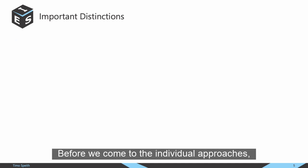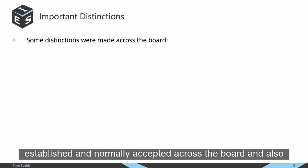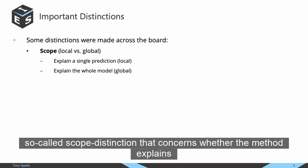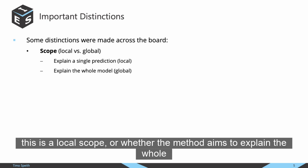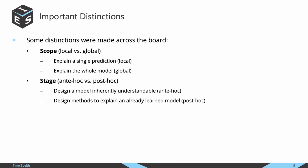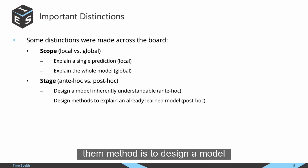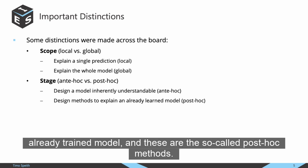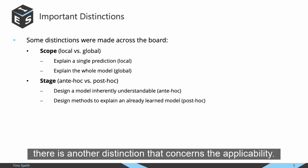Before covering the individual approaches, we first make some distinctions that are relatively well established and normally accepted across the reviewed papers. First, there is the scope distinction: whether the method explains just a single prediction — a local scope — or whether the method aims to explain the whole model — a global scope. Furthermore, there is a distinction of stage: whether the aim is to design a model that is inherently understandable, called ante-hoc methods, or to design methods that explain an already trained model, called post-hoc methods.